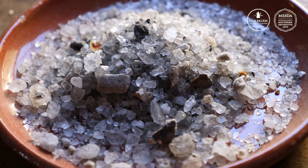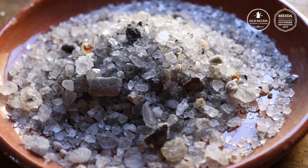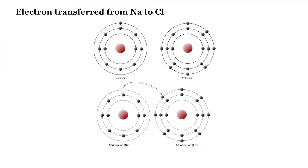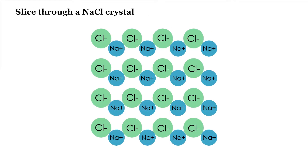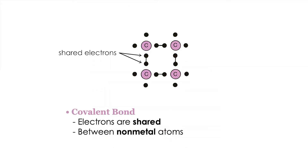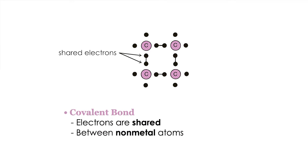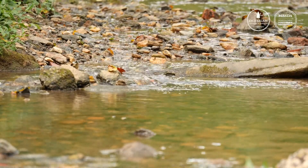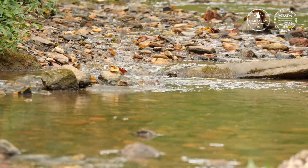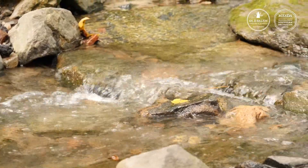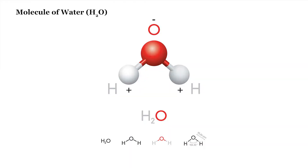Sodium's one valence electron is attracted to chlorine's seven valence electrons, forming a balanced outer valence of eight electrons. Covalent bonds differ from ionic bonds as they occur between two nonmetals. A common example of a covalent bond is water. The oxygen atom contains six valence electrons and wants to balance its outer shell to eight, thereby attracting two hydrogen atoms carrying a full outer shell of eight valence electrons.